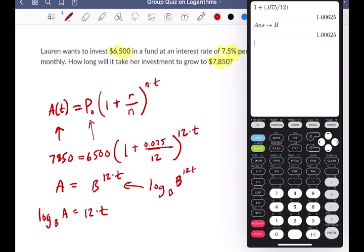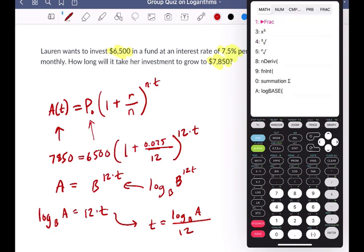Okay, so t is then going to equal what? If I divide both sides by 12, I get log base B of A divided by 12, and that'll be my answer. And I can do that in the calculator because if I go to math, press the math button, at the very bottom you see there's log base.